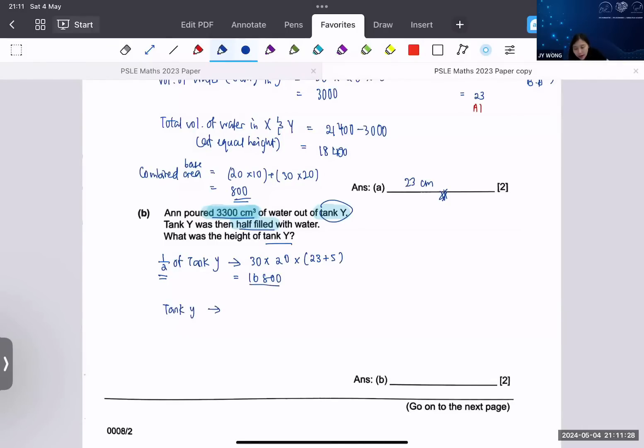So if half of tank Y can hold 16,800 cubic centimeters, one full tank can hold how much? Before I times two, I haven't finished. You need to pour the water out that it becomes half filled, so I need to remember to minus away 3,300 before I multiply by two. That is the crucial part. That gives 13,500.